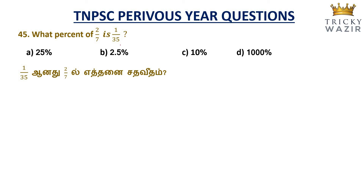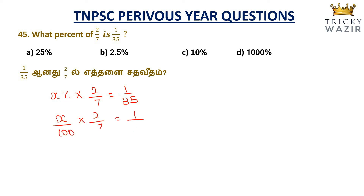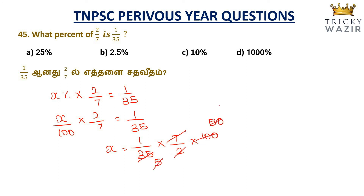Next sum: What percent of 2/7 is 1/35? Let x percent times 2/7 equal 1/35. So x/100 times 2/7 equals 1/35. Solving: x equals 1/35 times 7/2 times 100. Cancelling 7 and 2 gives x equals 10. So 10 percent of 2/7 equals 1/35.